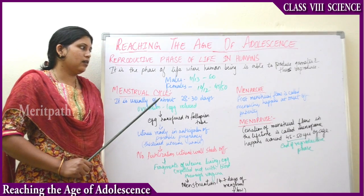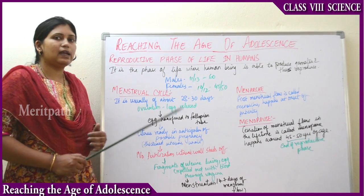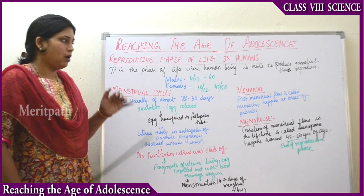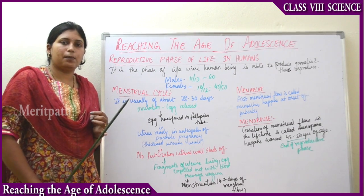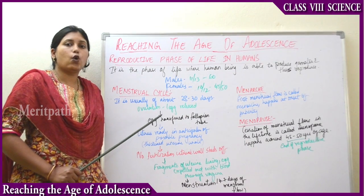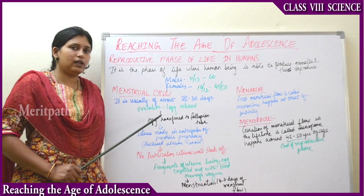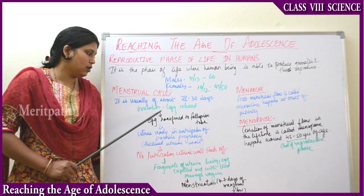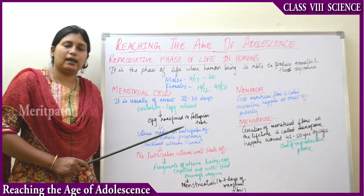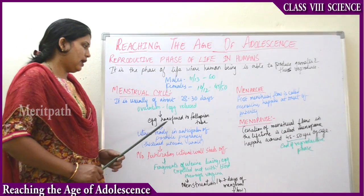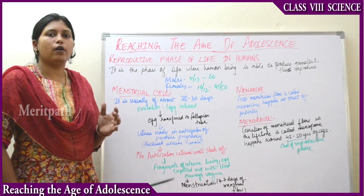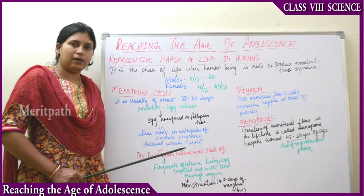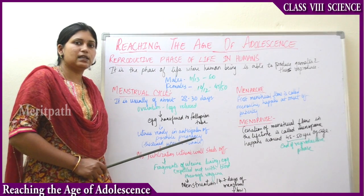Next, the menstrual cycle, which is usually about 28 to 30 days. It occurs only in the female reproductive system. In this process, first ovulation occurs — one egg is released from one ovary into the fallopian tubes or oviducts. When the egg reaches the fallopian tubes, the uterus makes itself ready in anticipation of possible pregnancy, thinking that a sperm may come and fertilization may occur.